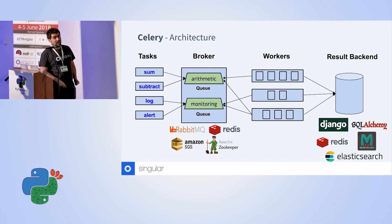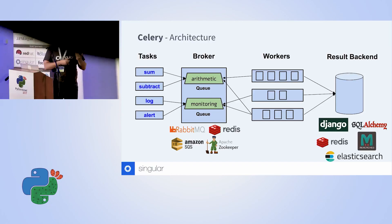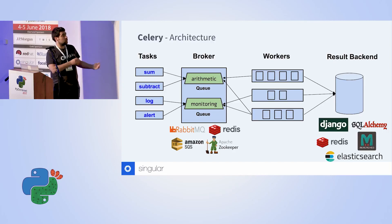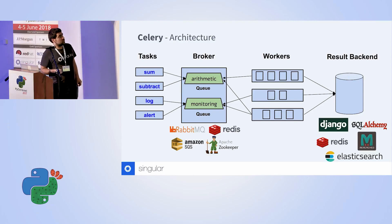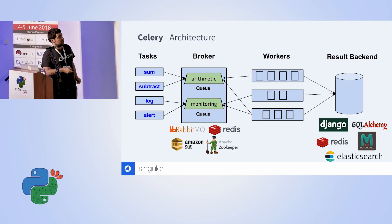Diving into the architecture of Celery: you can define different types of tasks. In this example we have four tasks divided into two categories — two arithmetic tasks and two monitoring tasks — so we allocated different queues to them. We can then allocate different workers that consume from one or more queues, and each has their own concurrency settings so we can run more or fewer tasks in parallel. Tasks can also optionally have results saved to a result backend.